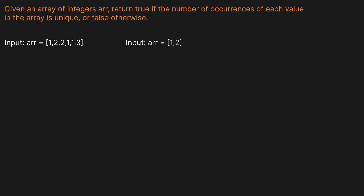Let's look at a basic example where we have the input array [1, 2, 2, 1, 1, 3]. So how frequently does each element occur? There's a 1, a 2, and a 3. How many 1s do we have? Let's count them — we have 1 here, 1 here, and 1 here. So there are three 1s.